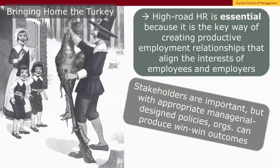This is a really important viewpoint to underscore because it's the foundation of what I called in a previous video high-road human resources strategies, and it is essential in this view for creating win-win employment relationships. This is called a unitarist view of the employment relationship, where workers and organizations are assumed to share a number of common interests. It's simply a matter of managers finding the right policies to align those interests to produce win-win outcomes. This is a very important view for thinking about modern high-road human resources practices.